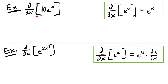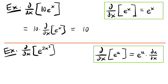For this derivative, let's start by pulling this constant multiple out, and we'll have that this is equal to 10 times the derivative ddx of e to the power of x, which from this rule is just equal to e to the power of x. And so this is equal to 10 times e to the power of x. This is the derivative of this function — they are the same function, but it is still the derivative.